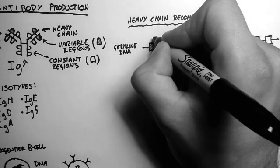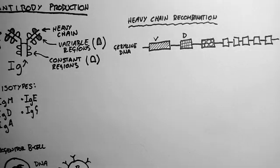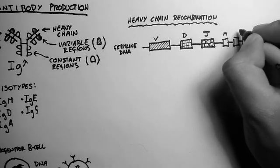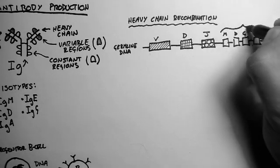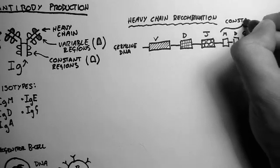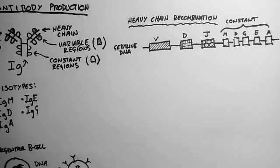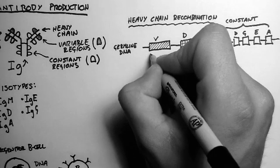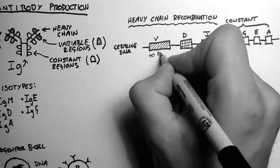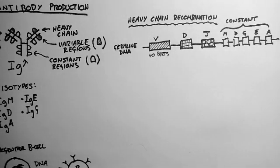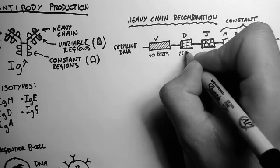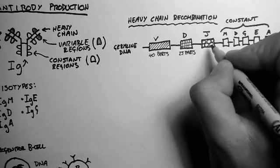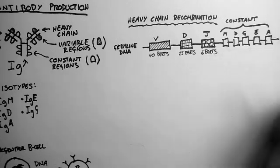This region is called the V region for variable, this one the D region for diversity, the J region for joining, and then an M, a D, a G, an E, and an A region. And these regions are the constant regions. You might already notice that they're the types of isotype we talked about before. Now there are 40 parts to the V region, 25 parts to the D region, 6 parts to the J region.